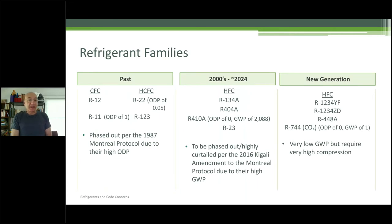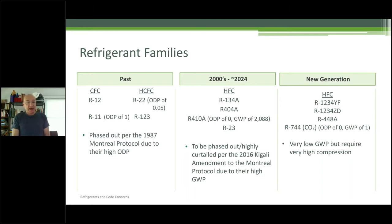Going back to refrigerant families: in the past we had R12, R22, R11, and R123. Some of you are probably still replacing some of these machines — we still see a lot of R22 in New York City. They were phased out in 1987, but phasing out doesn't mean you can't buy it anymore — it's not manufactured, but there's plenty of stock available.